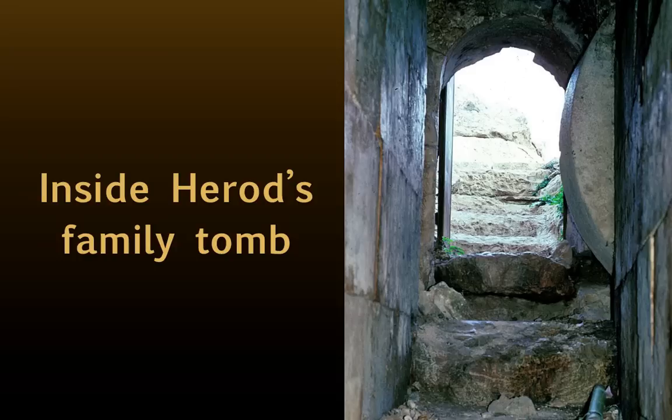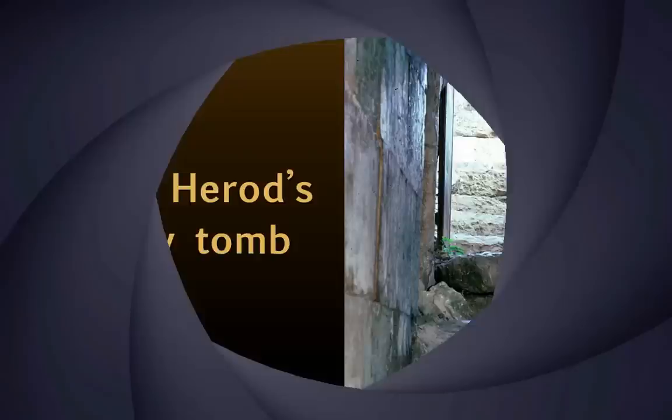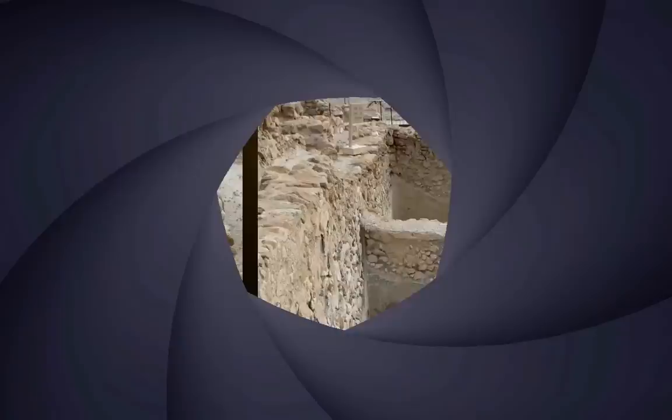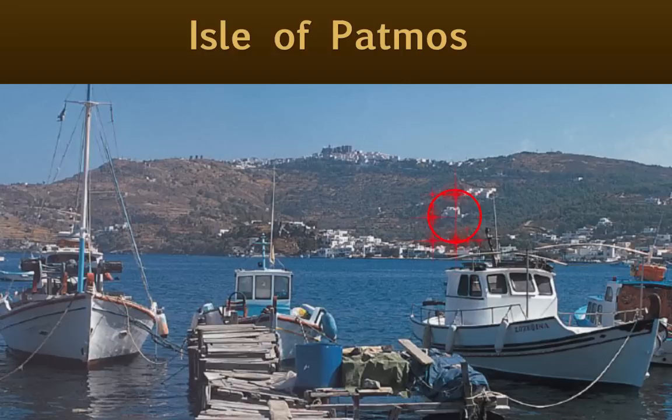This unique photo was taken from inside Herod's family tomb. Note the round rock at the upper right, poised to drop into the slot and thereby seal the tomb. And these two photographs show part of the extensive water system at Qumran, built for their cleansing ceremonies. The left photo shows an ancient aqueduct. To the right, several cisterns in which water was stored. Note the remains of the clay plaster which was necessary to make the porous limestone watertight.